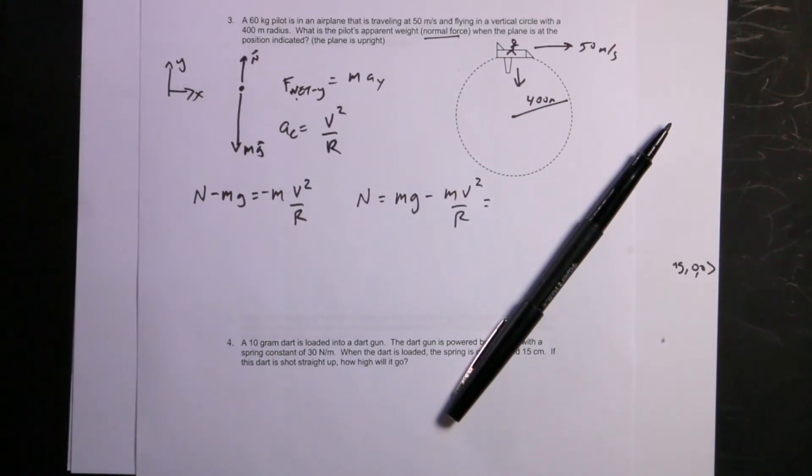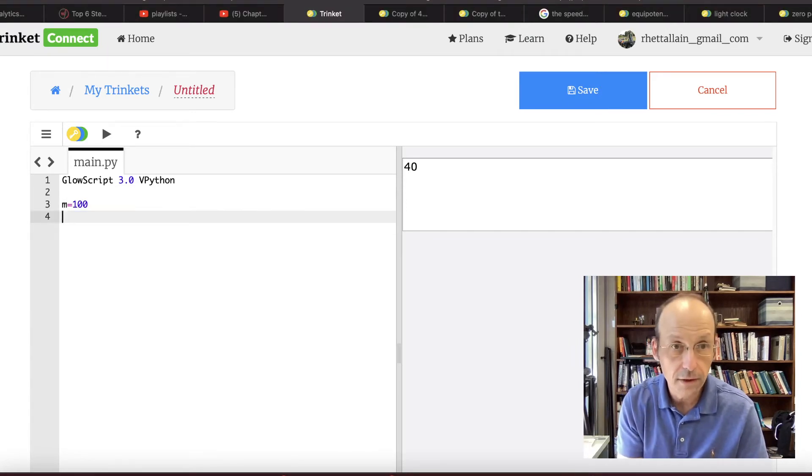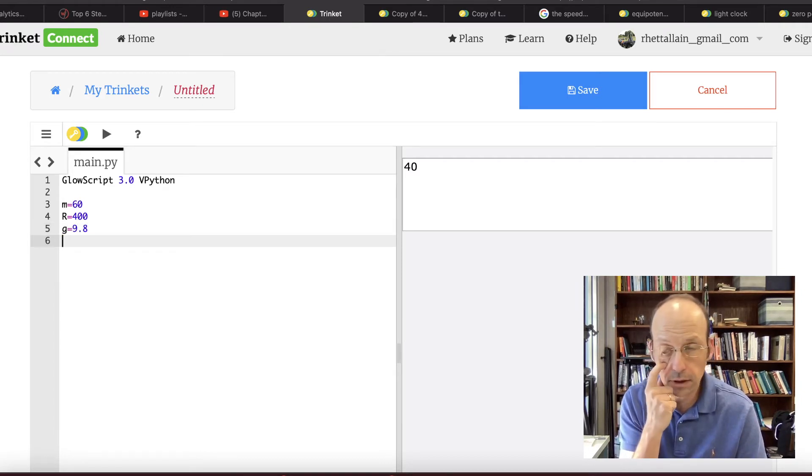Okay, let's do that in Python. So again, that's my stuff from the last problem. I'm just going to delete that. I don't need to save all this stuff. Sometimes I do, sometimes I don't. m equals 60, r equals 400, g equals 9.8, and then, what did I say? v equals 50.